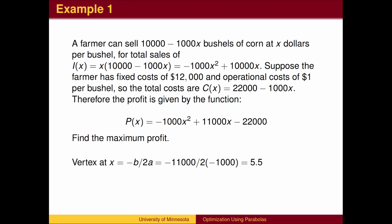The x-coordinate of the vertex is at negative b over 2a, which in this case is 5.5. The profit is found by plugging 5.5 into the original equation. The maximum profit to the farmer is $8,250.